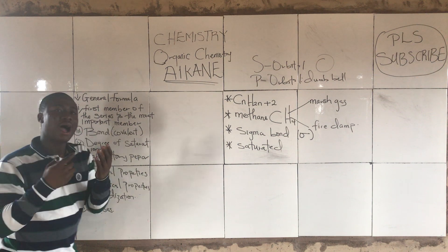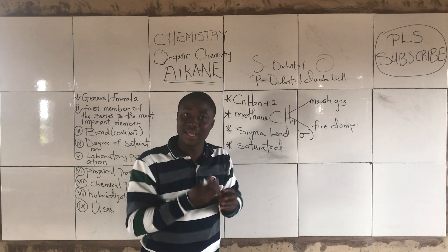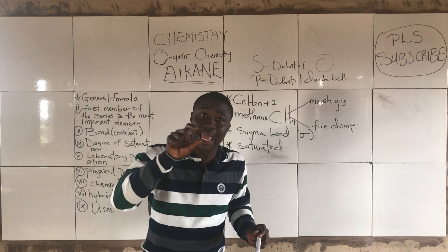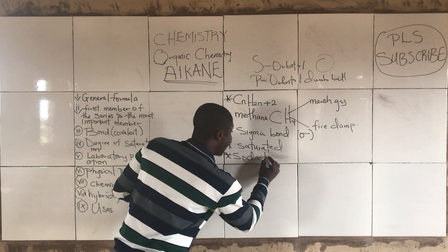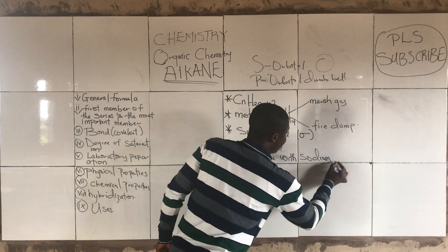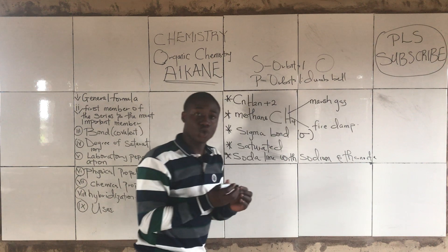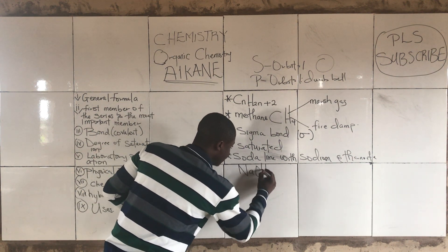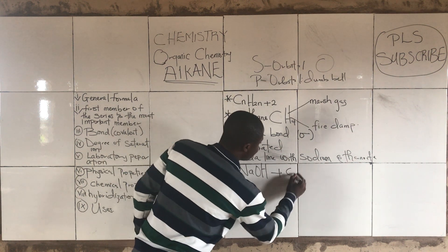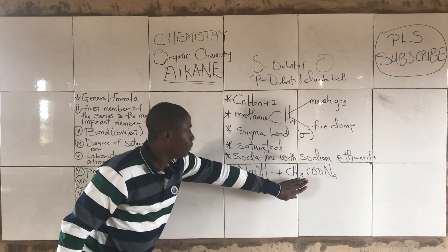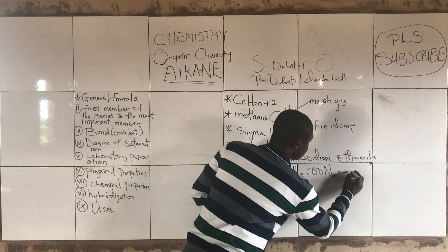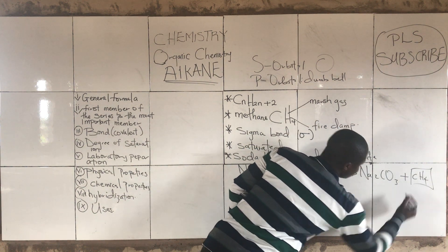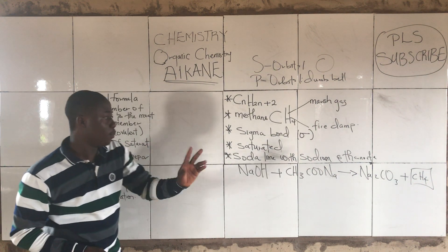Talking about the laboratory preparation — how do you prepare alkanes? The first member, methane, is prepared laboratorically by reacting soda lime with sodium ethanoate. Soda lime is basically sodium hydroxide. Sodium ethanoate is CH₃COONa. The products will be sodium carbonate, Na₂CO₃, and methane gas. This is one way we prepare methane laboratorically.